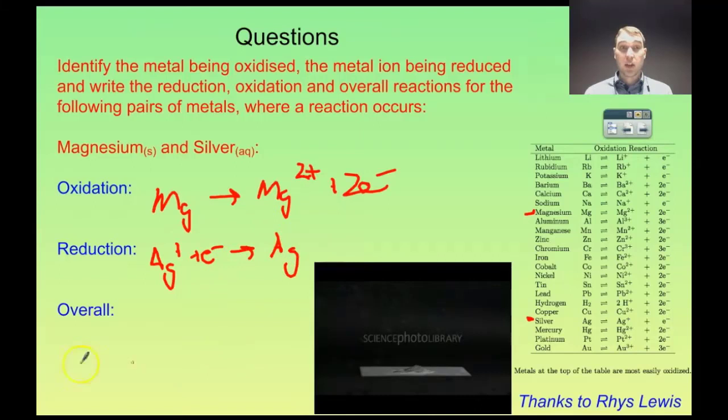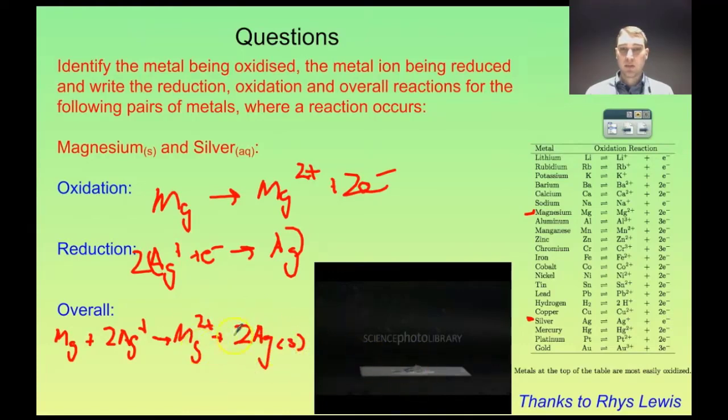So now we can do our reaction equation. And again we're going to have to multiply the bottom one here by 2 to balance out the number of electrons. So the magnesium is reacting with 2 silver ions and that produces magnesium ions and 2 silvers. So solid silver would be being produced here, but that would explode with the magnesium that's left over. Magnesium ions in that little bit of water there, silver ions and solid magnesium over here.